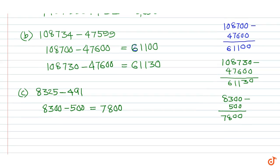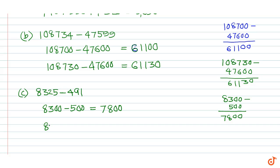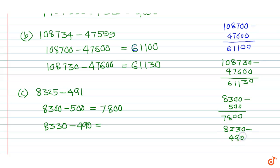By rounding off to nearest ten we get 8330 minus 490, which is equal to 8330 minus 490, which equals 7840.